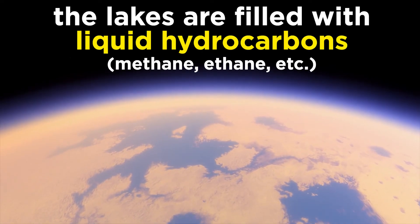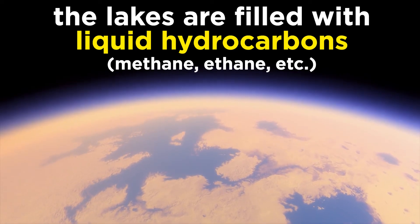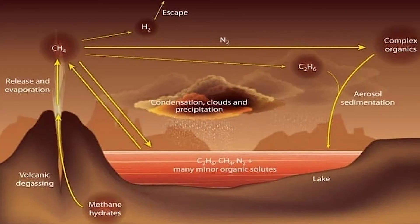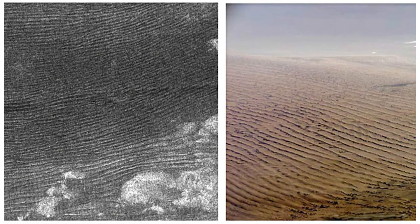However, unlike Earth, Titan's lakes are filled with liquid hydrocarbons, likely a mix of methane and ethane. The presence of lakes and river channels indicates that Titan has a hydrological cycle, but with methane and ethane instead of water. Cassini also found large subaerial dune fields in Titan's lower latitudes. These dunes are not composed of silicate sand like on Earth, but small fragments of water ice derived from Titan's bedrock.